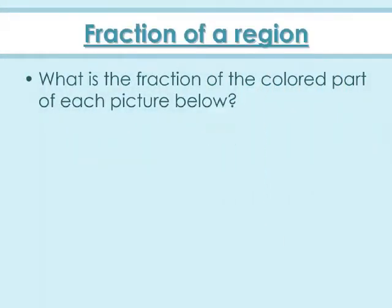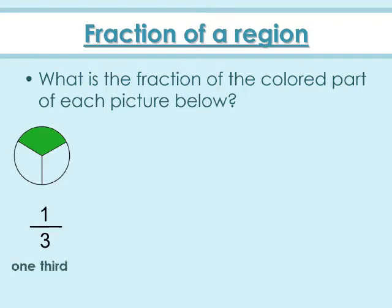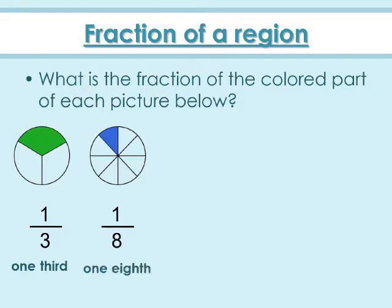Now let us revise a few examples of fraction of a region. What is the fraction of the colored part of each picture below? This circle is divided into three equal parts; out of three equal parts, one part is colored, so the fraction is one by three or one third. The second circle is divided into eight equal parts; out of eight equal parts, one part is colored, so the fraction is one by eight or one eighth.